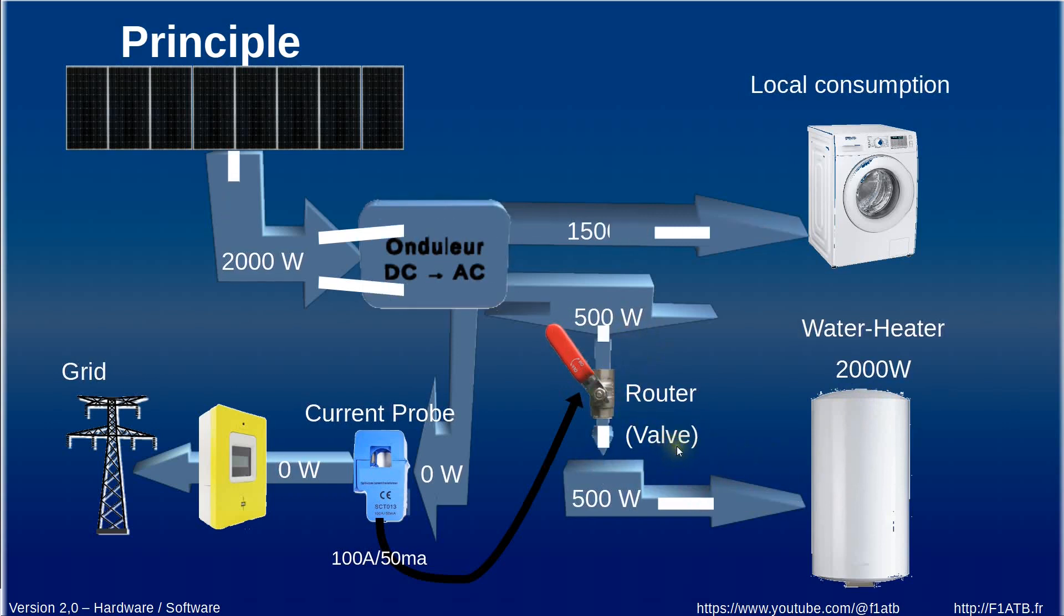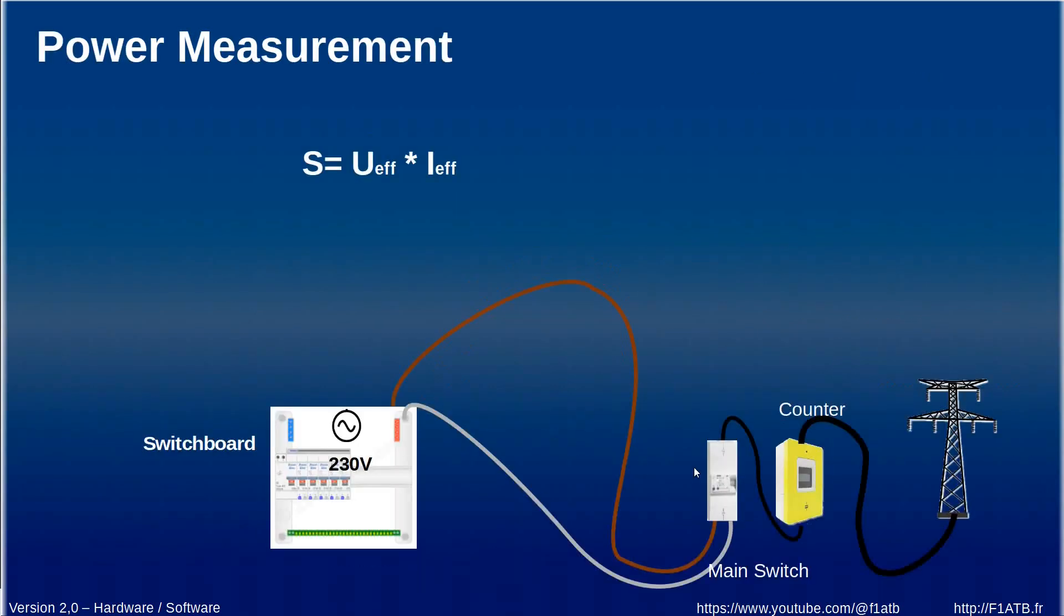and we will regulate the transfer of energy to the water heater here which normally requires 2000 watts but we just limit to 500 watts and how we do that is simply by implementing a current probe at the entrance of the energy in your house in order to be sure that no energy enters or no energy is going out in the public grid.